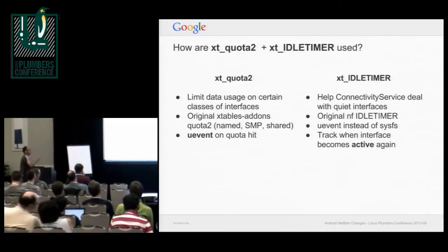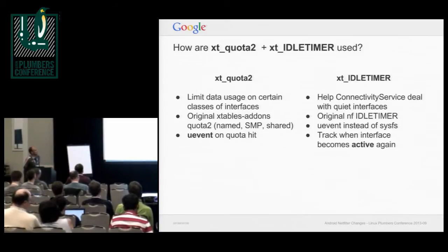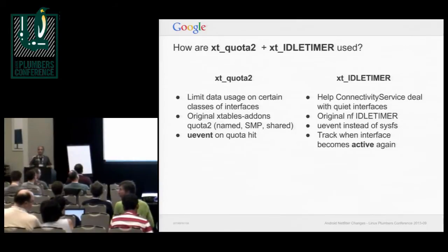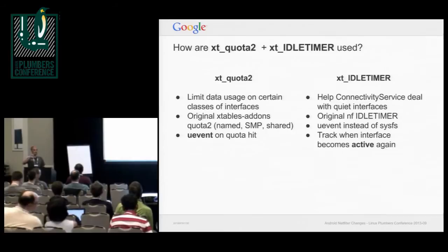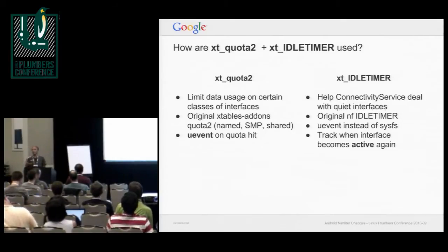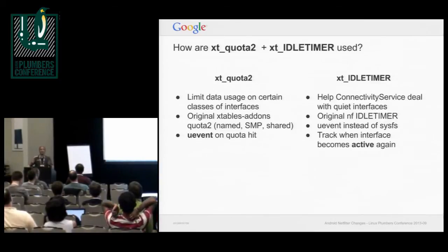We took the original idle timer, switched to uevents as the interface for networking, and added detection of when the interface goes active again. As soon as somebody turns on the interface or the cell tower tells the phone to go to full power, we can start piggybacking on that event and bursting out small packets, saving power.